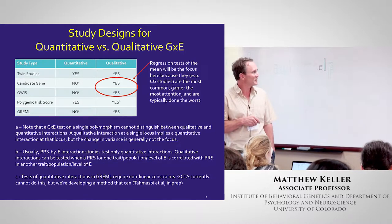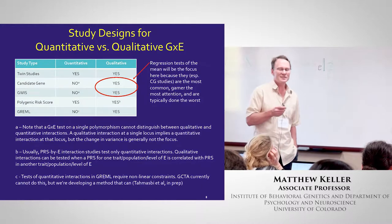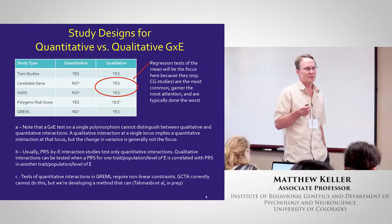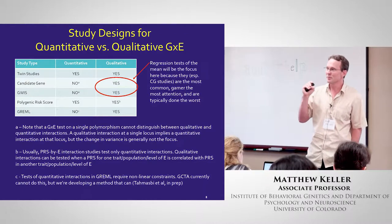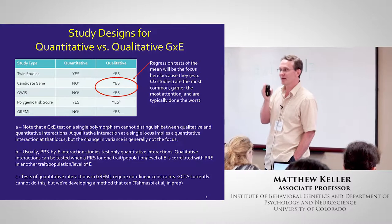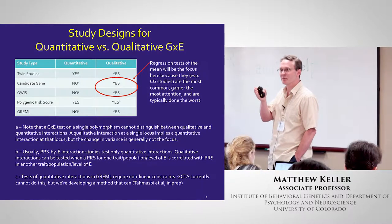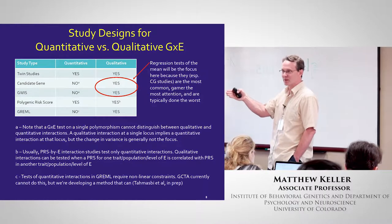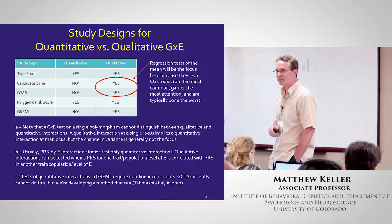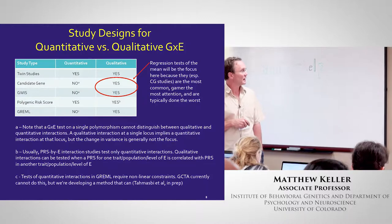A GWIS is a genome-wide interaction study. Rather than focusing on a particular polymorphism, we take the interaction model — modeling the effect of the environment, the effect of a particular SNP, and the effect of that SNP times the environmental moderator — for every SNP in the genome. These aren't done a lot, but they are out there. Here again, the focus is on a qualitative G×E.